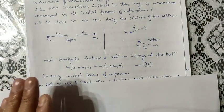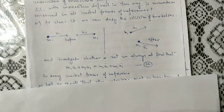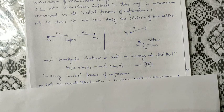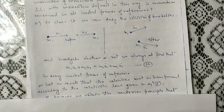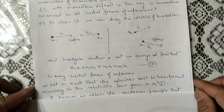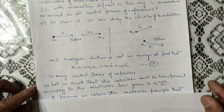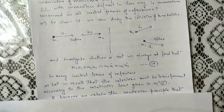Before the collision, particles m₁ and m₂ are moving with velocities u₁ and u₂ toward each other. After the collision, m₁ and m₂ are moving with velocities u₁' and u₂'. We investigate whether m₁u₁ + m₂u₂ = m₁u₁' + m₂u₂' holds in every inertial frame of reference.